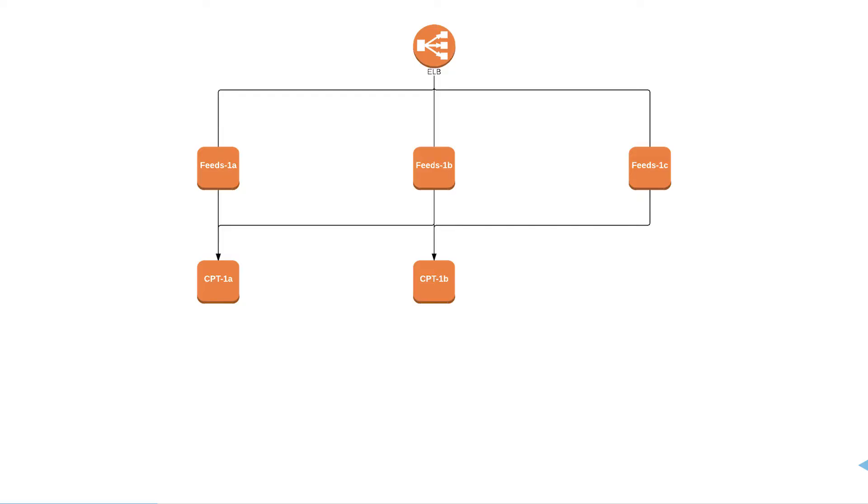We look at a simple example. We've got two components here: feeds and CPT. They need to talk to each other. We want to add a new node and bring it into service. So we spin up a new node. But in order to bring it into service, you need to Puppet run each of the feeds boxes.